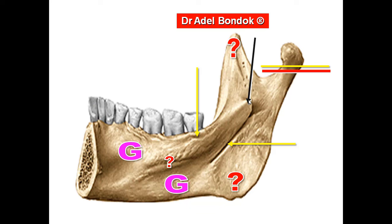This projection is the lingula. The sphenomandibular ligament is attached to the lingula. The stylomandibular ligament is attached to the posterior border of the angle of the mandible. The pterygomandibular ligament is attached to the mylohyoid line, between the mylohyoid muscle and the superior constrictor.